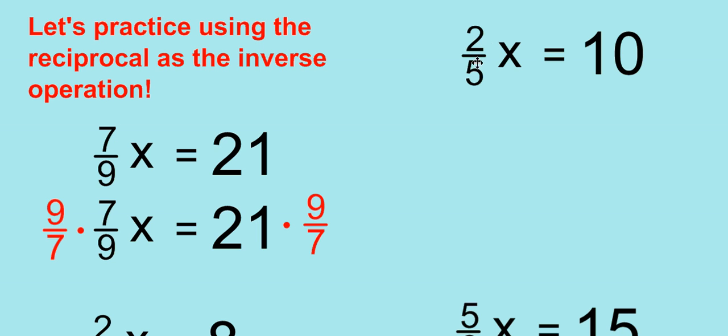Let's look at this other example. 2/5 x equals 10. What are we going to multiply 2/5 by in order to reverse or undo this effect? That's right, the reciprocal, 5/2. And what we do to one side, we must do to the other.